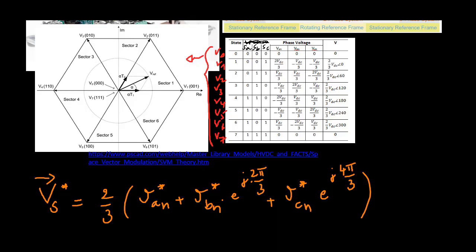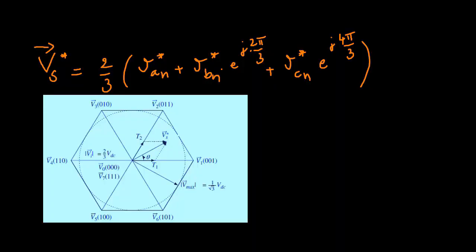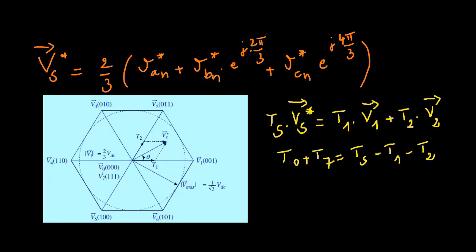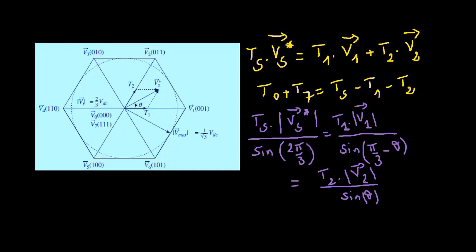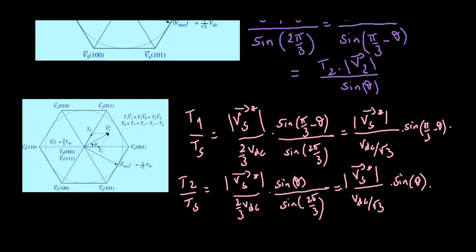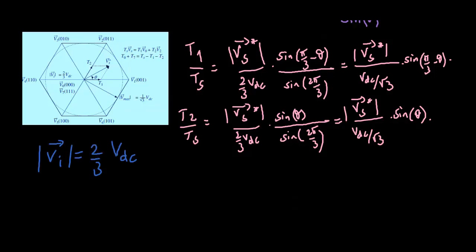If a balanced three-phase voltage is employed, then this vector is a rotating vector with electrical speed omega_e, which is the frequency of the sinusoidal signal. The modulation of the desired space vector VS* is obtained by the time average of its two nearest active vectors and a zero vector, either V0 or V7. Taking the first sector as an example, the vector VS* could be modulated with the time average of active vectors V1 and V2 within one sampling period TS. T1 and T2 are the duration of on-time for the active vectors V1 and V2 respectively. The relationship between the modulated vector VS* and the two nearest active vectors is obtained by applying the geometric properties of the triangle, giving the duty cycle ratio of each active vector in terms of the active vector lengths.